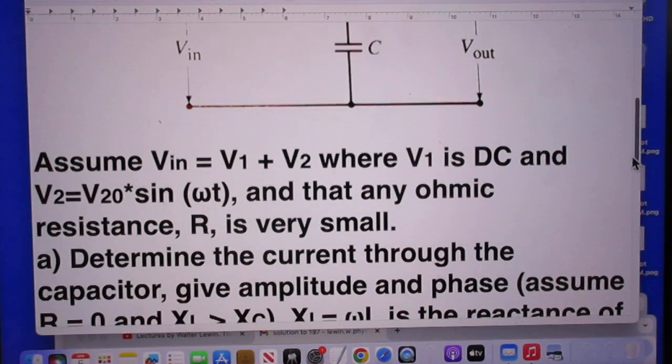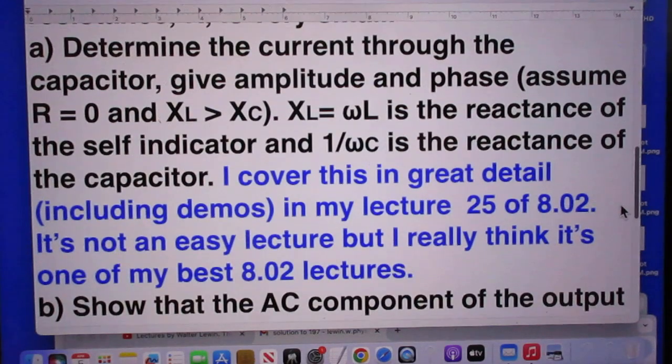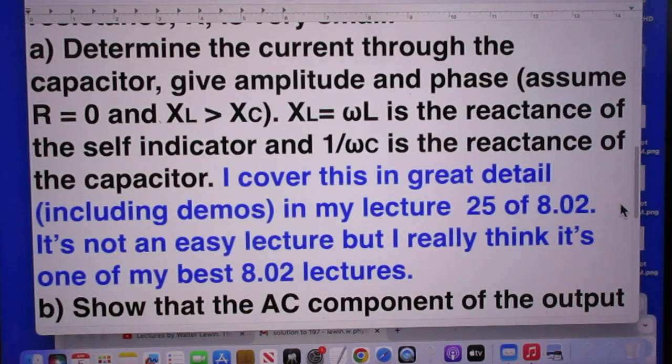First question: determine the current through the capacitor. Give the amplitude and the phase and assume that R is zero and that XL is larger than XC. XL = ωL is the reactance of the self-inductor, and 1/ωC is the reactance of the capacitor.